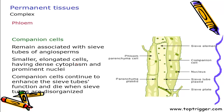Companion cells are always associated with the sieve tube. They are present alongside the sieve tube because the nuclear function of the sieve tube is carried out by companion cells, since the sieve tube does not have any nucleus. The cells are smaller, have dense cytoplasm and prominent nuclei. Since it is a companion cell, when the sieve tube dies, the companion cell also dies.